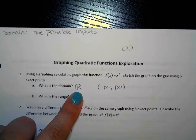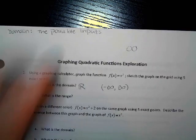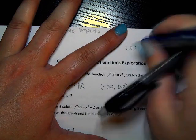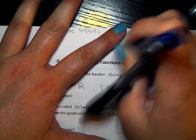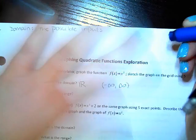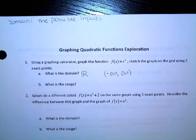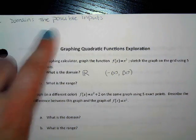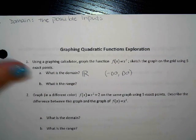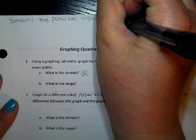So what is the domain? All real numbers — double bar R — or negative infinity to positive infinity. It's two different types of notation, but it means the same thing. So every single x value that you can think of is going to work. We're just reminding ourselves: domain is the possible inputs — those are x values.